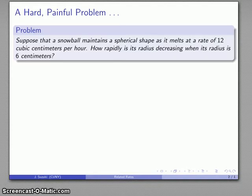So here's a hard and painful problem. Suppose I have a snowball that maintains a spherical shape as it melts at a rate of 12 cubic centimeters per hour. We might want to know how rapidly its radius is decreasing when its radius is 6 centimeters.